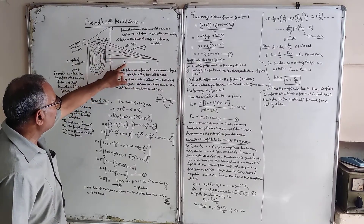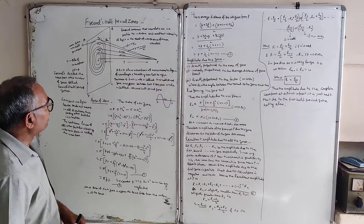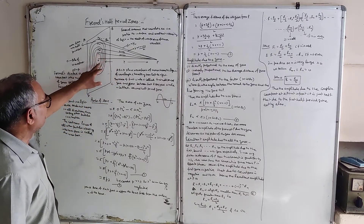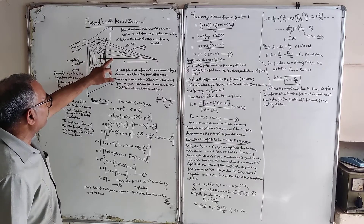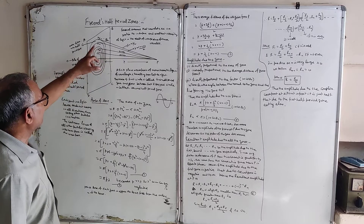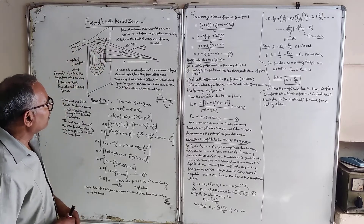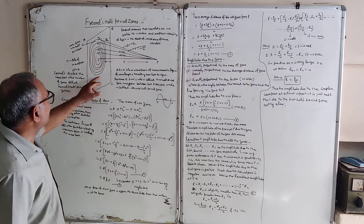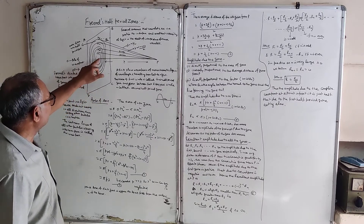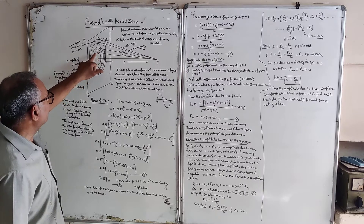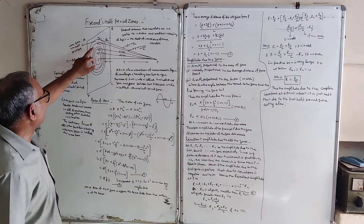From point P, we add lambda/2 to get the first circle OM1. Then we take P plus 2·(lambda/2) and draw another circle. Continuing, we take P plus n·(lambda/2) and P plus (n−1)·(lambda/2). The area of the first circle is called the first half period zone, the area between the first and second circles is the second half period zone, and the area between the (n−1)th and nth circles is the nth half period zone.